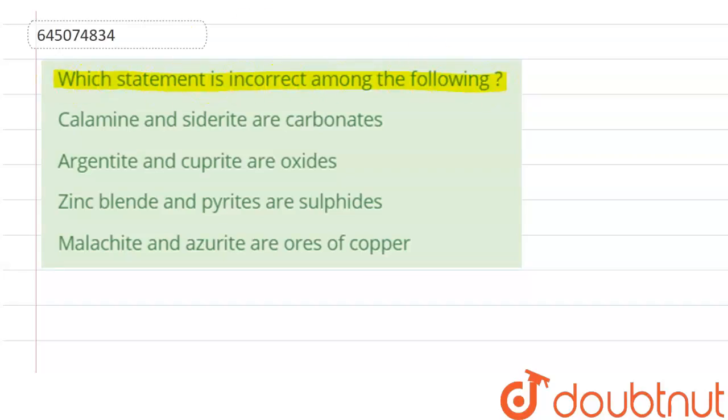First, calamine and sidrite are carbonates. Calamine and sidrite have carbonate as CO3. Calamine is zinc carbonate and sidrite has CO3, so this statement is correct. This is not the correct answer.